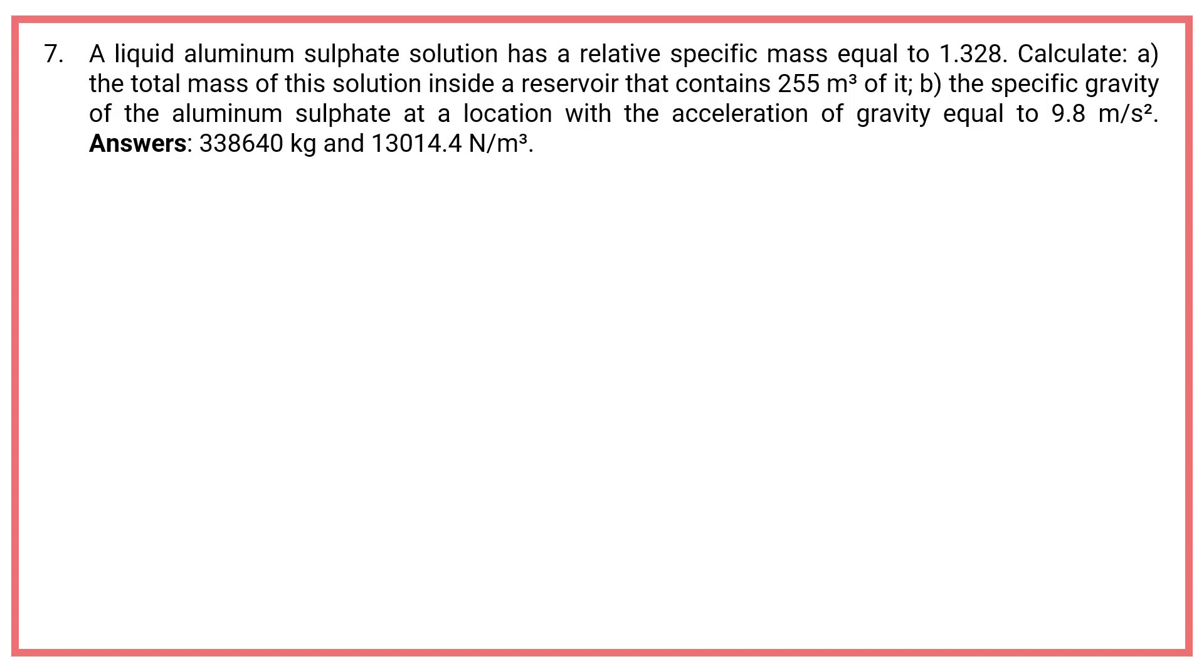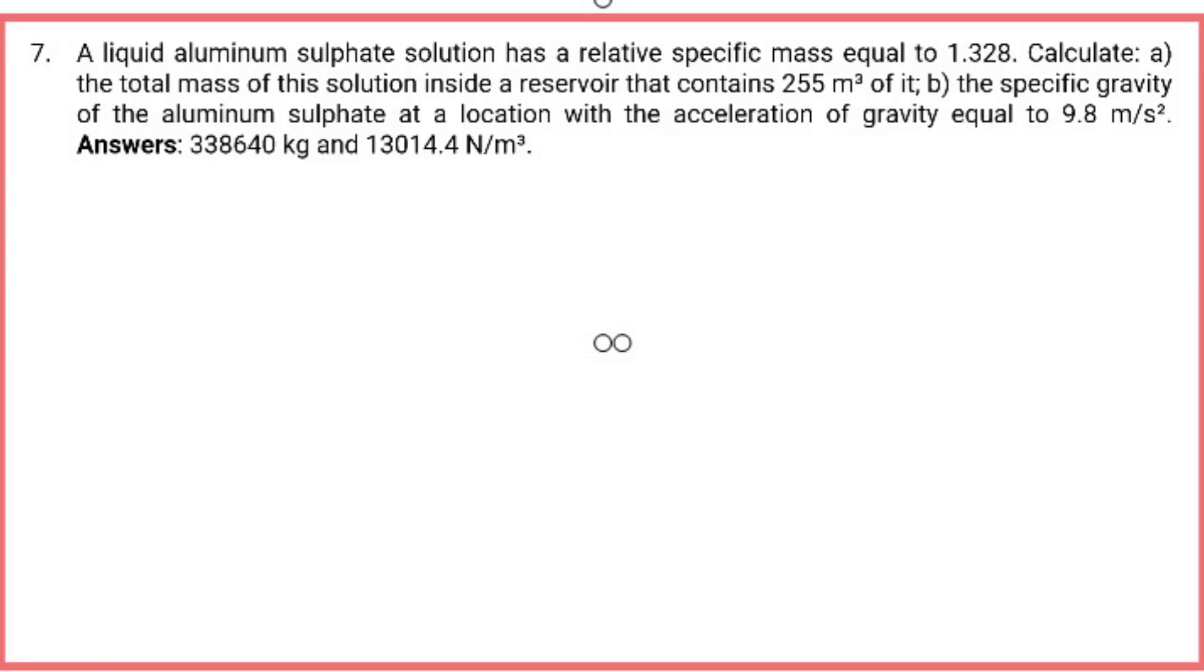Seventh: A liquid aluminum sulfate solution has a relative specific mass equal to 1.328. Calculate: A) The total mass of this solution inside a reservoir that contains 255 cubic meters of it. B) The specific gravity of the aluminum sulfate at a location with the acceleration of gravity equal to 9.8 meters per square second. Answers: 338,640 kilograms and 13,014.4 N per cubic meter.